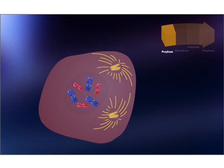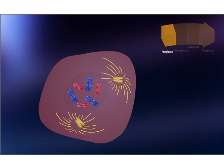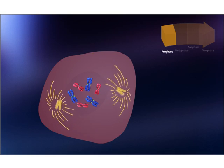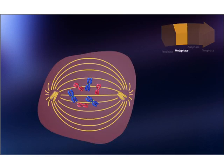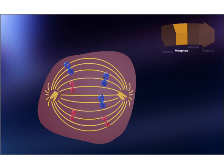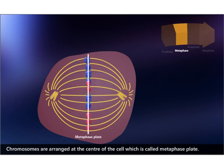Towards the end of prophase, the asters move towards the opposite poles of the cell. During metaphase, chromosomes are attached by spindle fibers at their centromere. Chromosomes are arranged at the center of the cell, which is called the metaphase plate.